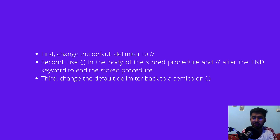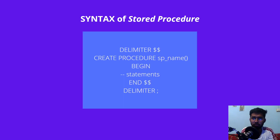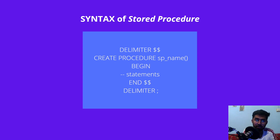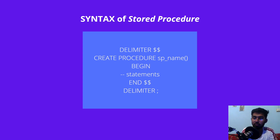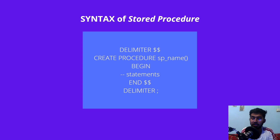Now looking at the syntax: first declare the delimiter — whichever character you want, such as the dollar sign. Then write CREATE PROCEDURE, give your procedure a name, and write parentheses. Inside the parentheses put any parameters you want, or leave them empty if there are none. After that write the BEGIN keyword, then your statements, then the END keyword, followed by your custom delimiter. Finally, write DELIMITER and the semicolon to restore the default.